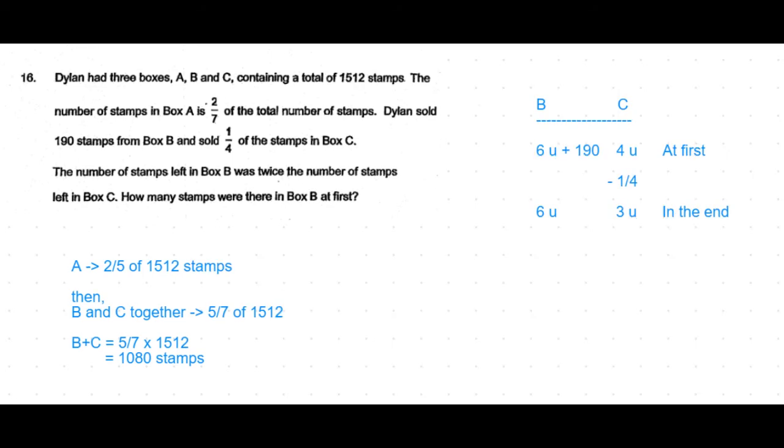So B at first is 6 units plus 190. But we already found that B and C together is 1080 stamps.